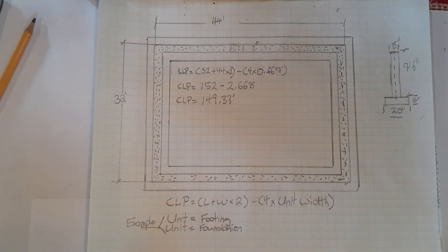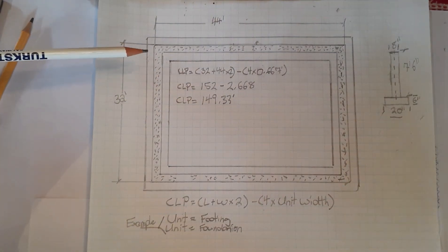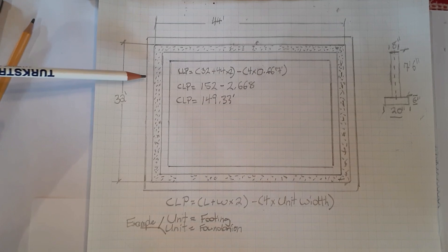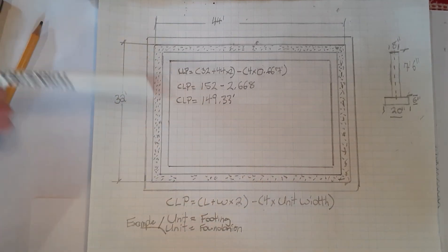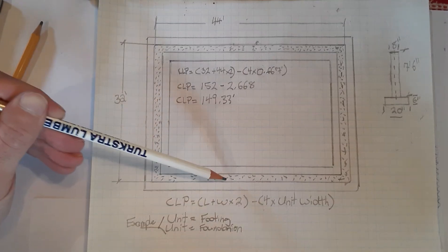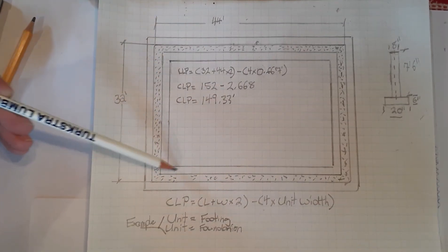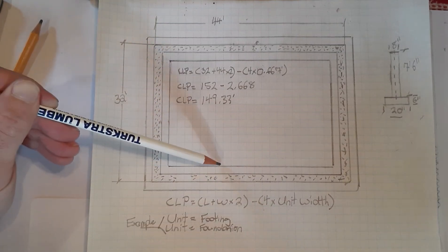It's useful for us to know for volume calculations as well as estimating. So what centerline perimeter is looking at — if we look at this particular drawing, we have the outside perimeter of the footing, the outside perimeter of the foundation, the inside perimeter of the foundation, and the inside perimeter of the footing.